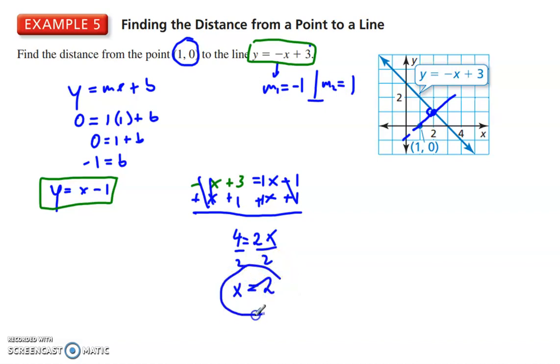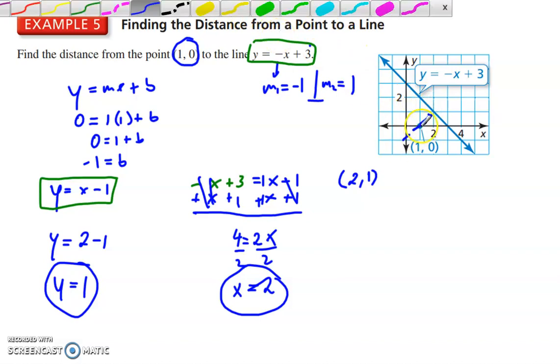Okay. So now I have the x-coordinate of the intersection. I can plug it into either one. I can plug it in here or here. I'll do this one because it's easier. y equals 2 minus 1. y equals 1. And therefore the coordinate is 1 for the y and 2 for the x. It's 2 and 1. So now I've found the point of intersection.